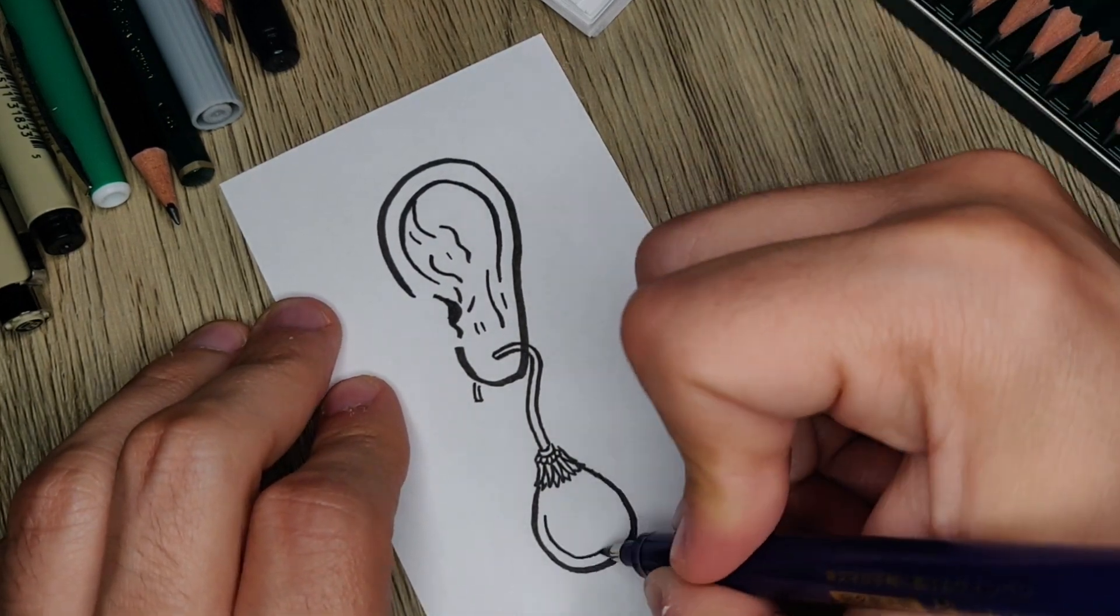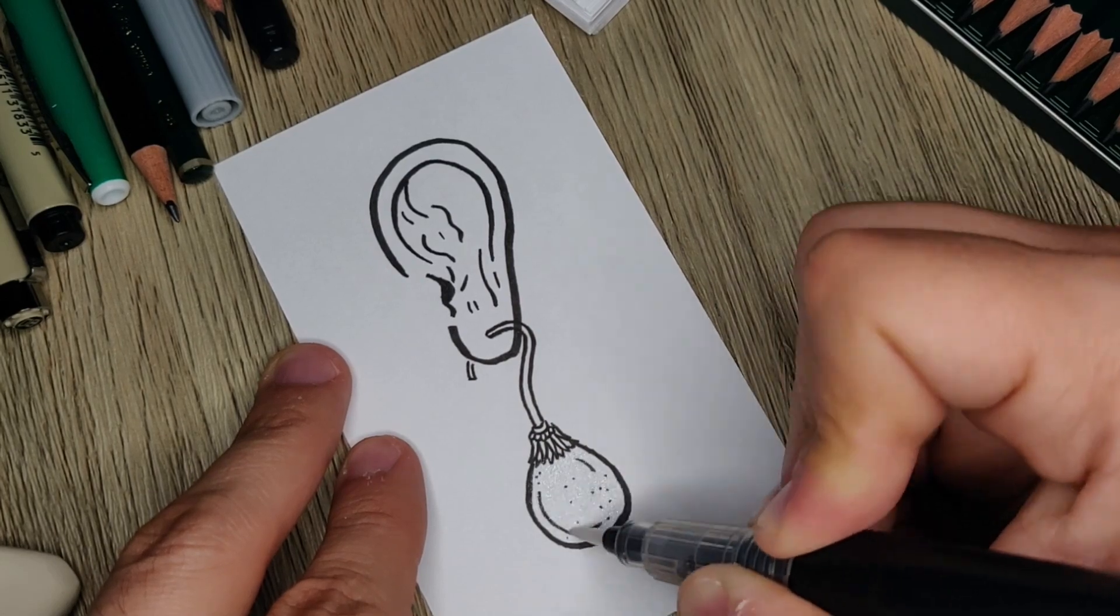And that is called a pearl earring. That is a real object that exists in this universe.